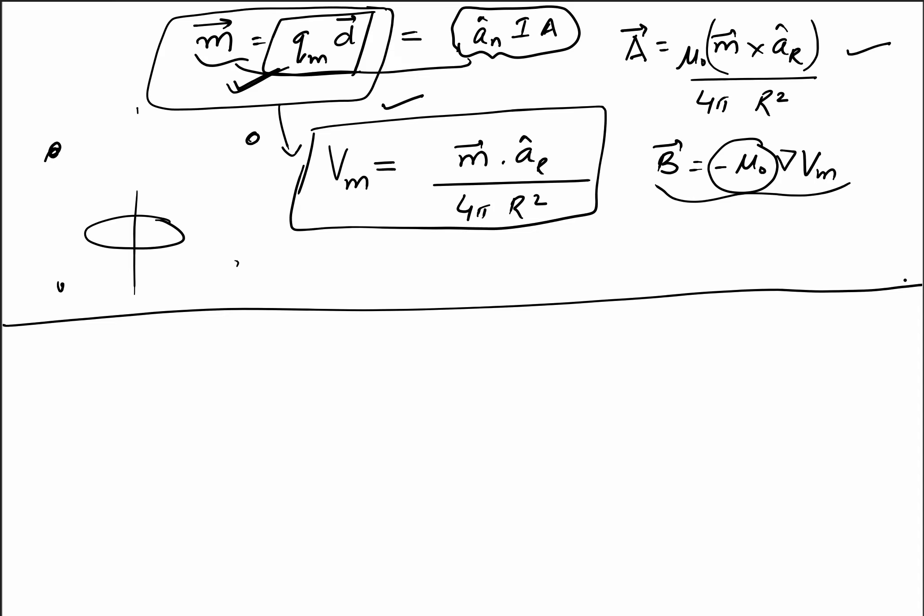In the classical model of an atom, electrons spin on their own axis as well as orbit the positively charged nucleus. These orbiting electrons cause circulating currents and thus form microscopic magnetic dipoles. Since a moving charge is equivalent to a current, these orbiting electrons form a circulating current equivalent to a magnetic dipole. Furthermore, since electrons are also spinning, that too gives an equivalent magnetic dipole.